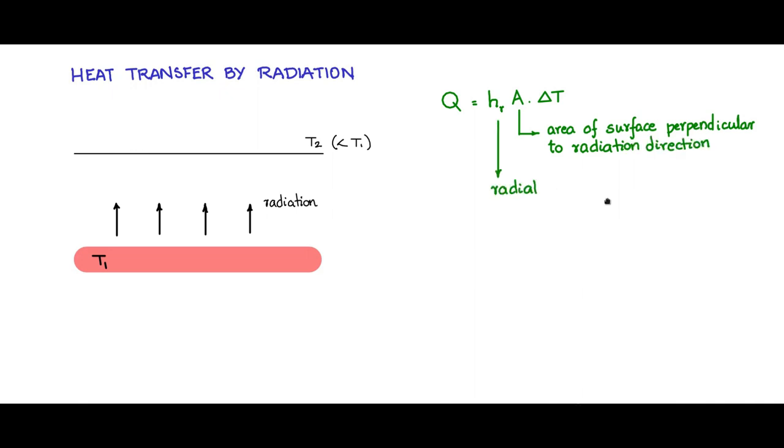H is the thermal radiation thermal coefficient and it is given by another empirical relationship: 4 into sigma into epsilon 1 minus phi T1 plus T2 by 2 whole to the power of 3.